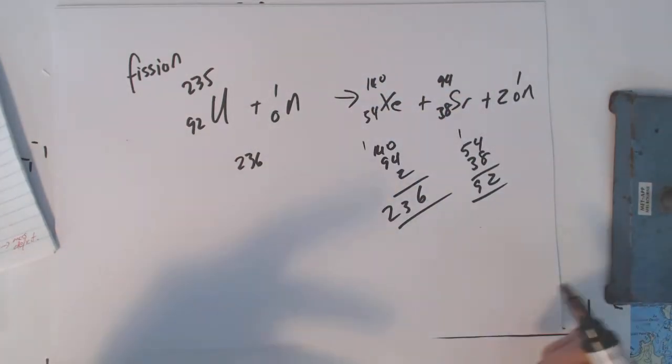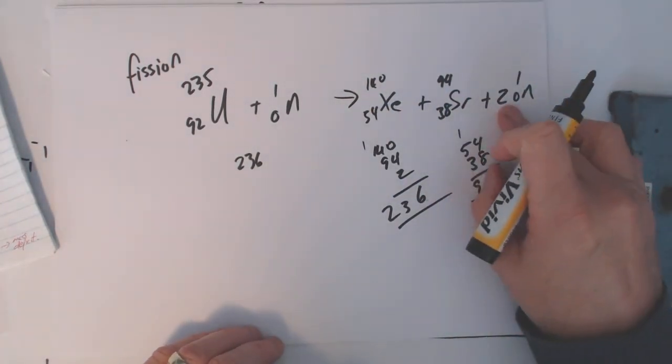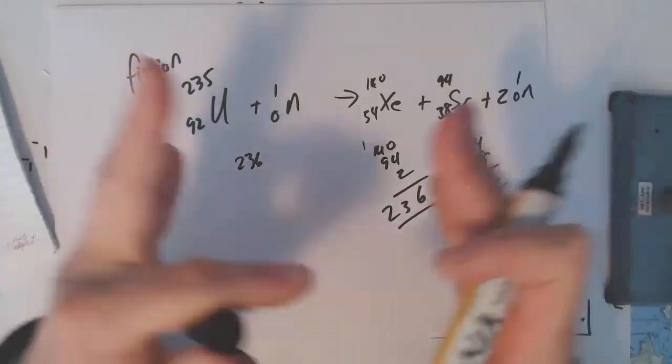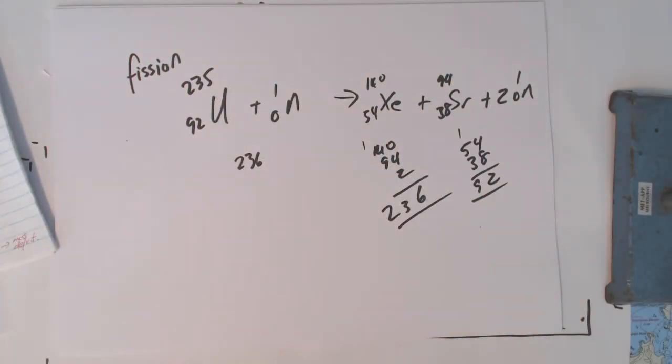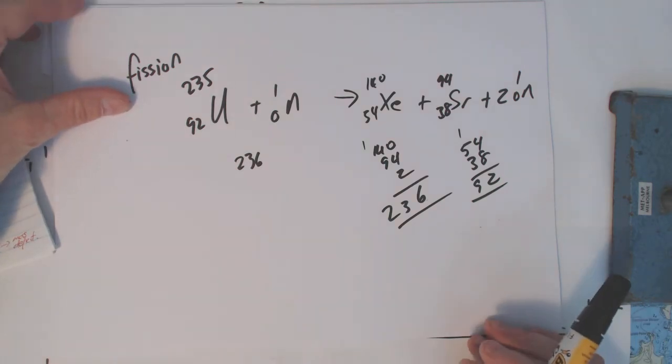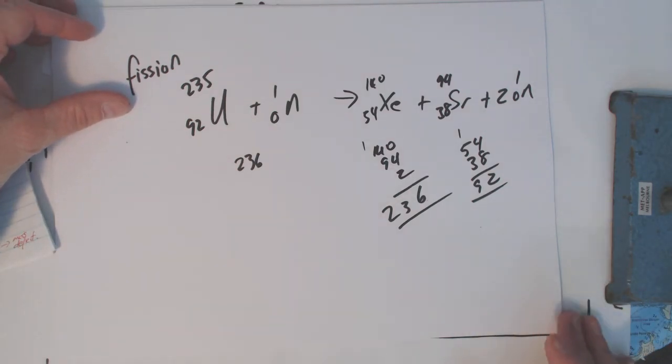And again, we've got these two daughter nuclei, two neutrons released. Because you've got those two neutrons, if this is a big package of uranium, it can go on and initiate another fission. And before you know it, you've got a nuclear bomb, right? When you've got critical mass. Remember those words?